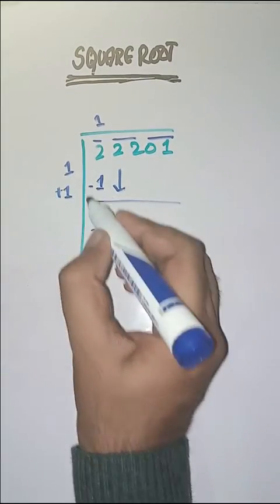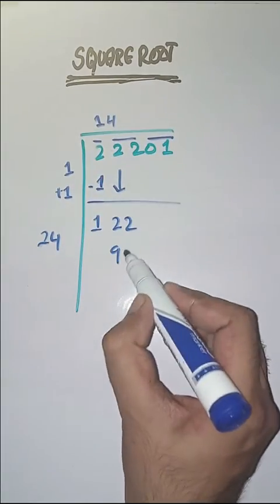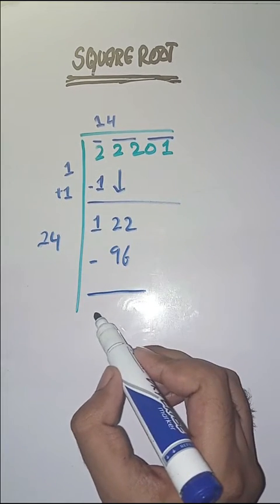Next pair 22, we bring down. Here we do 1 plus 1 which is equal to 2. Now we will take a number 4. 24 fours are 96. We subtract and get 26.